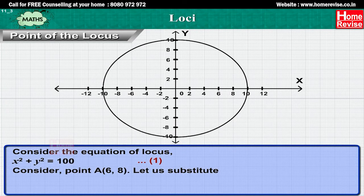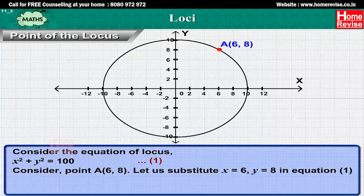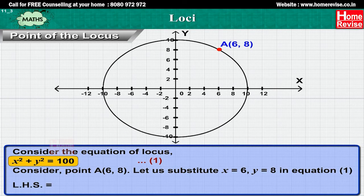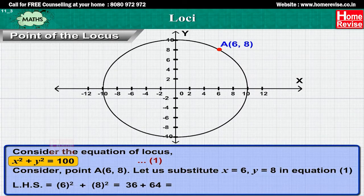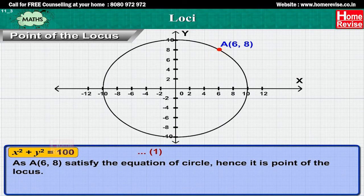Consider point A(6, 8). Substituting x = 6 and y = 8 in equation 1, we get LHS = 6² + 8² = 36 + 64 = 100, which equals RHS. Since A(6, 8) satisfies the equation of the circle, it is a point of the locus.